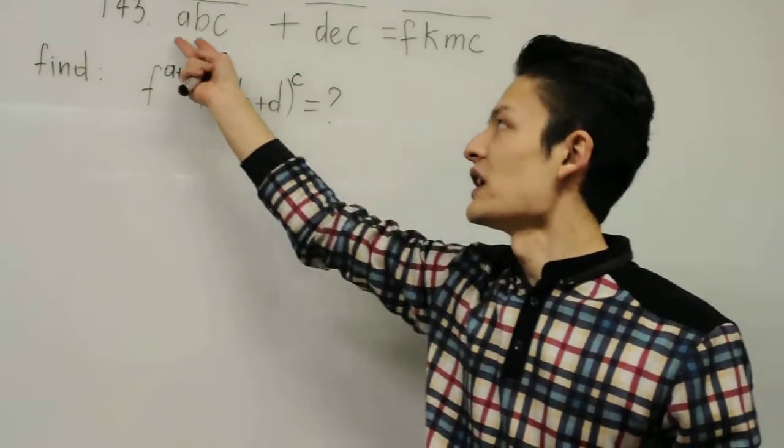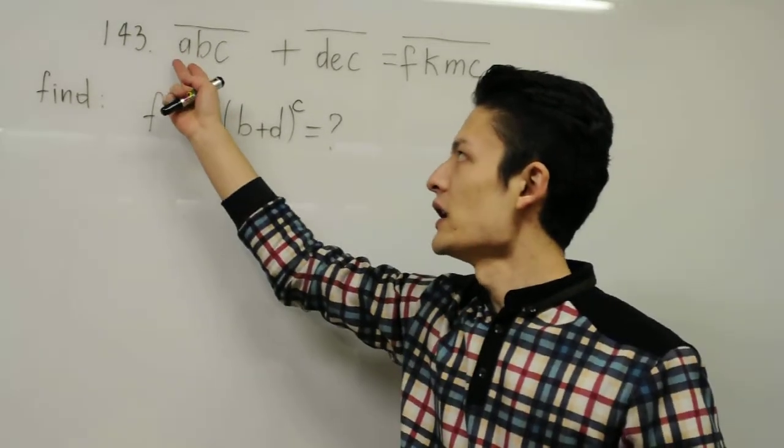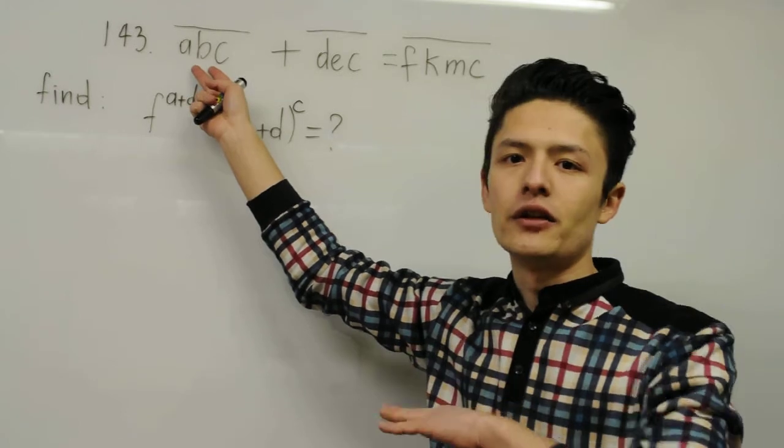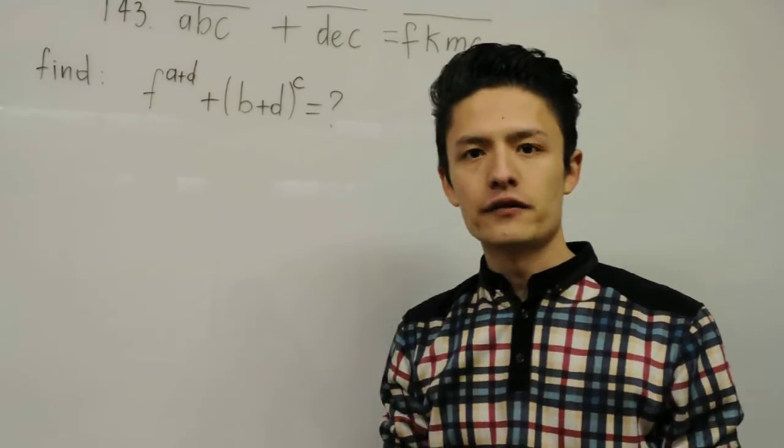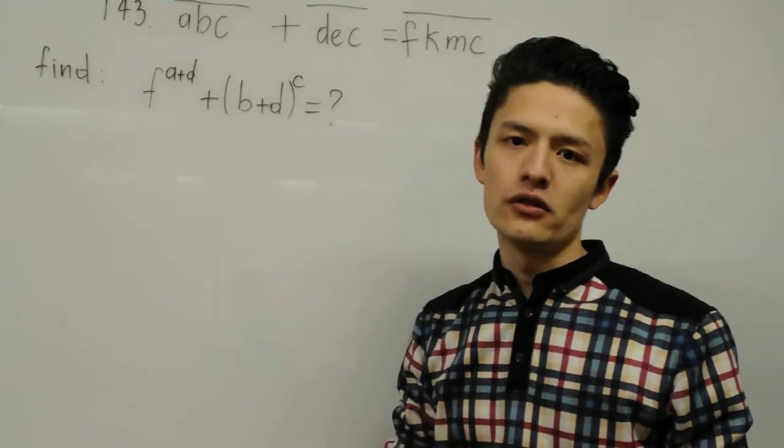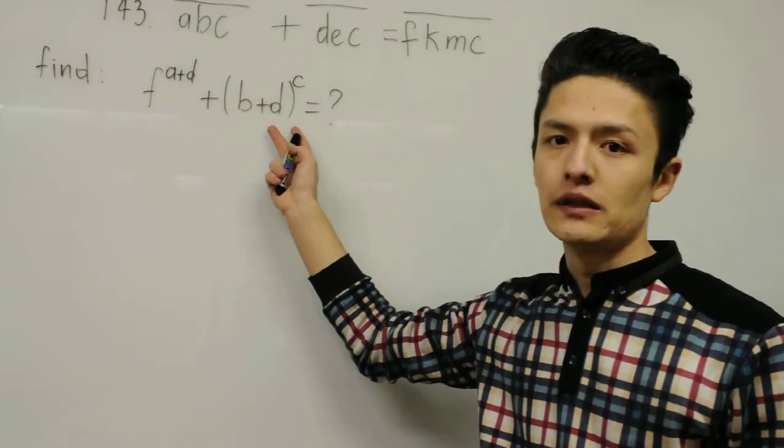It means that this ABC is a three-digit number. It's not something like A multiply B multiply C. No, it's a three-digit number, something like 245 or 342. And we need to find F to the A plus D plus B plus D to the C.